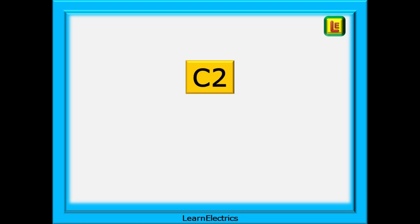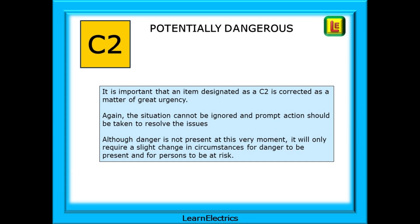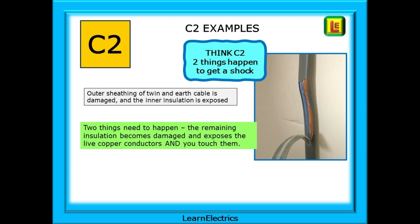Moving on to C2 observation codes. C2 codes are used for something that has the potential to be dangerous. It's important that an item designated as C2 is corrected as a matter of urgency. The situation cannot be ignored and prompt action should be taken to resolve the issues. Although danger is not present at this very moment, it will only require a slight change in circumstances for danger to be present. For example, the outer sheathing of a twin and earth cable is damaged and the inner insulation is exposed — two things need to happen: the remaining insulation becomes damaged and exposes the live copper conductors, and then you touch them. Think C2: two things happen to get an electric shock.